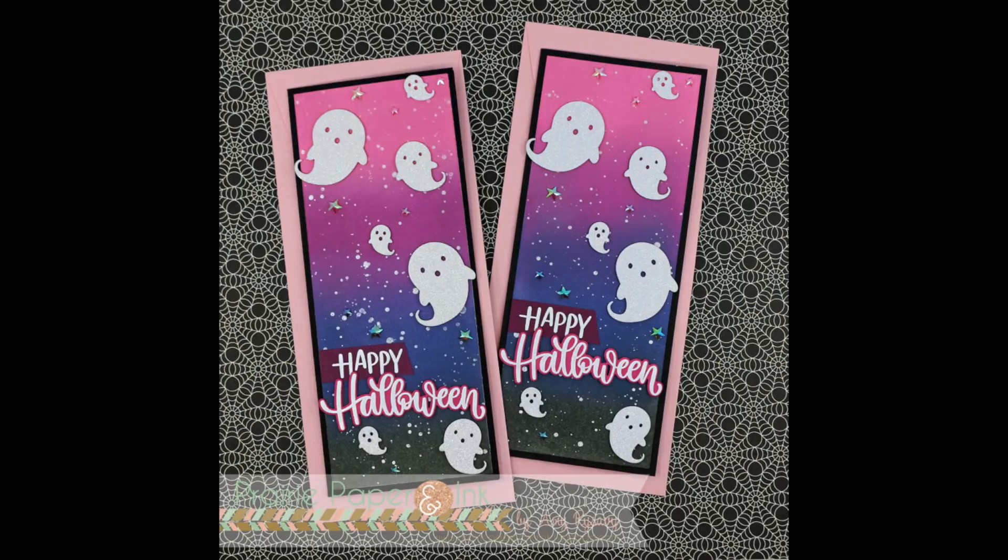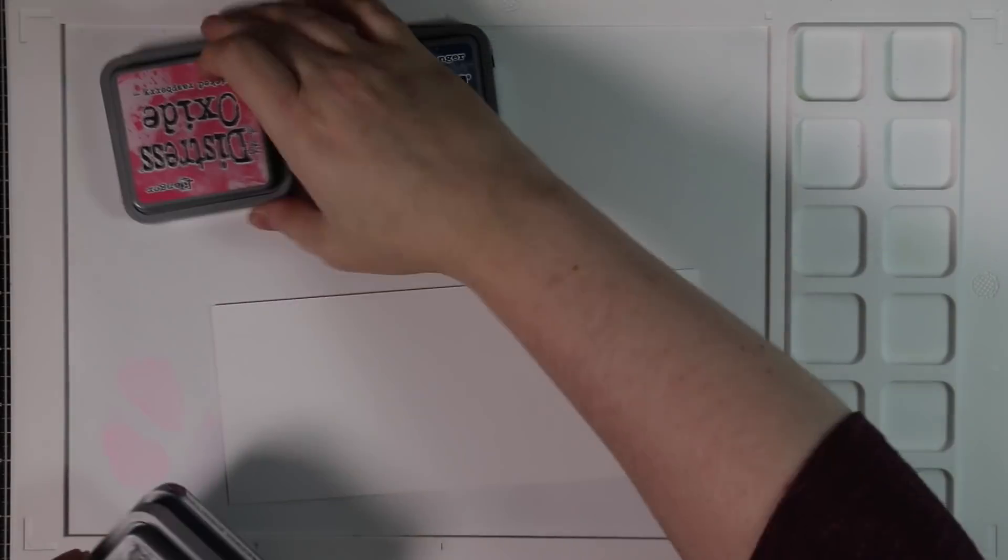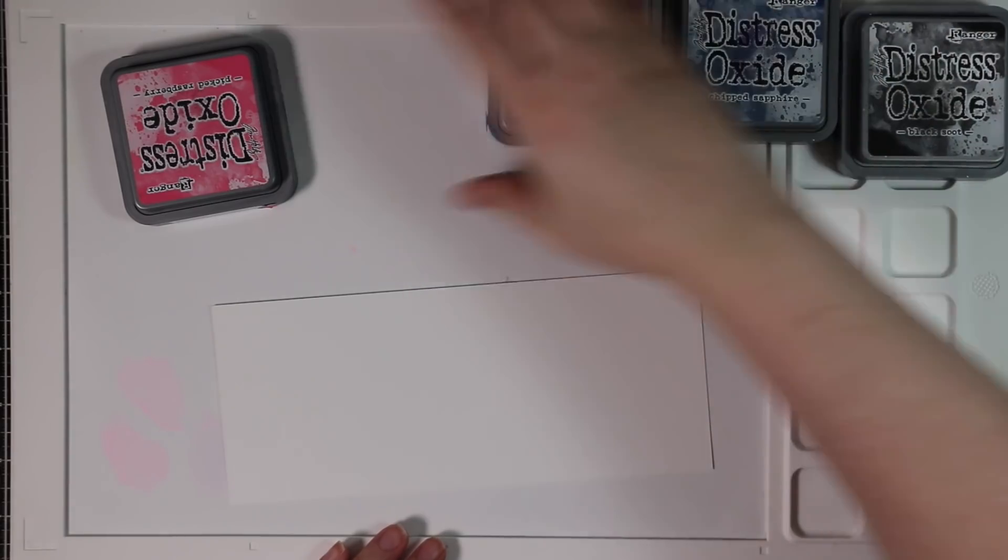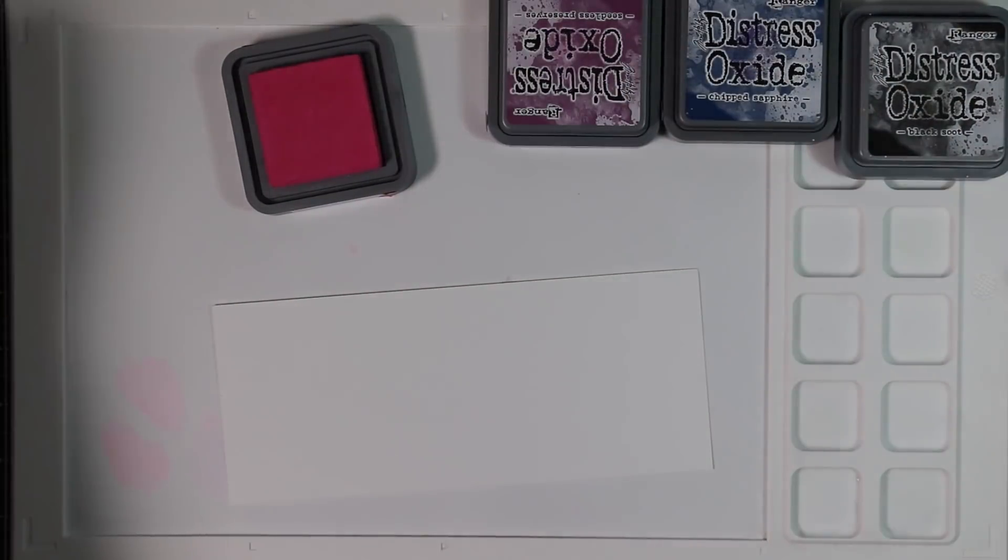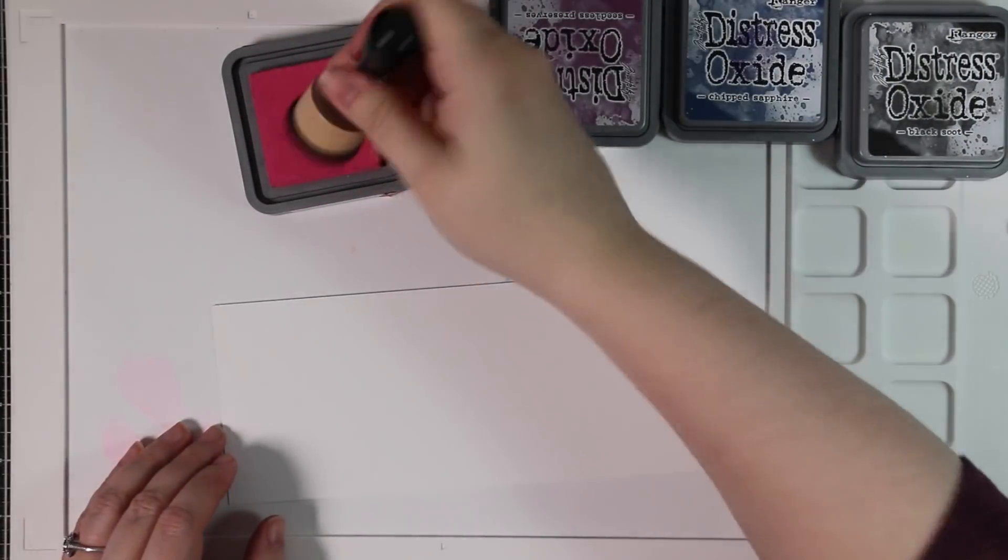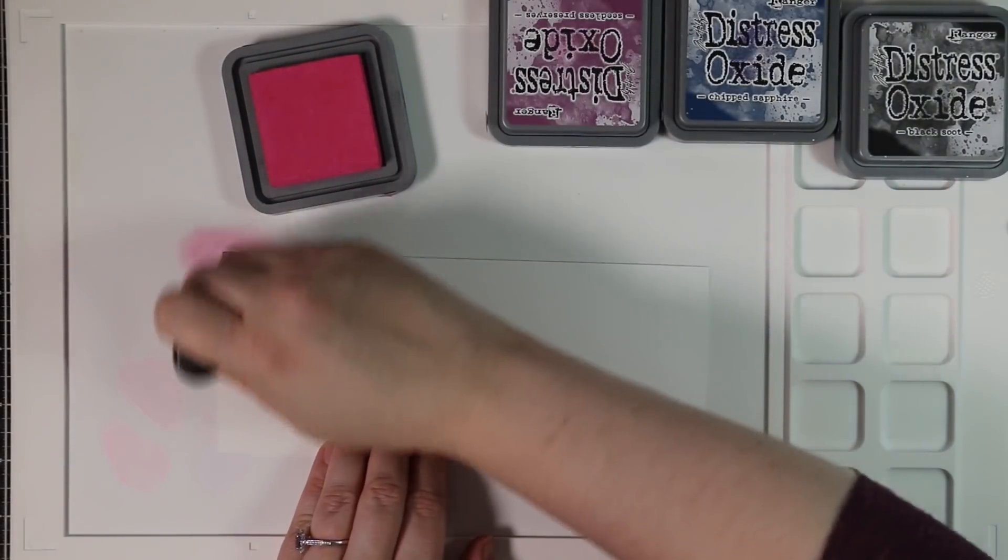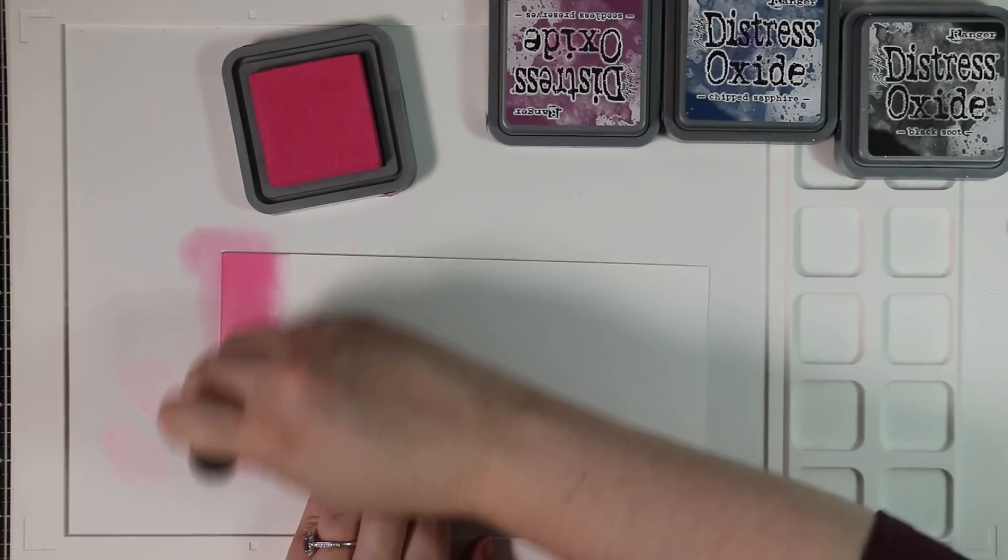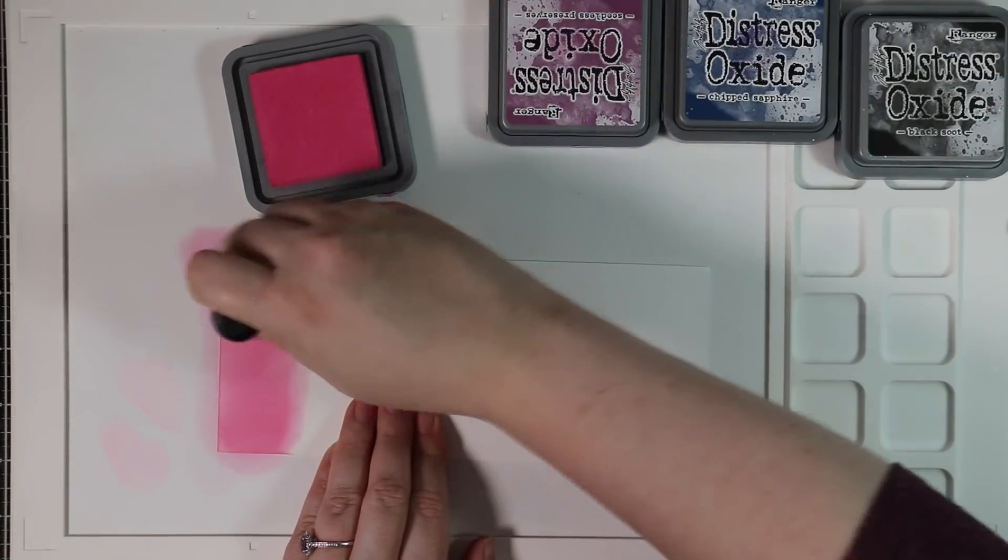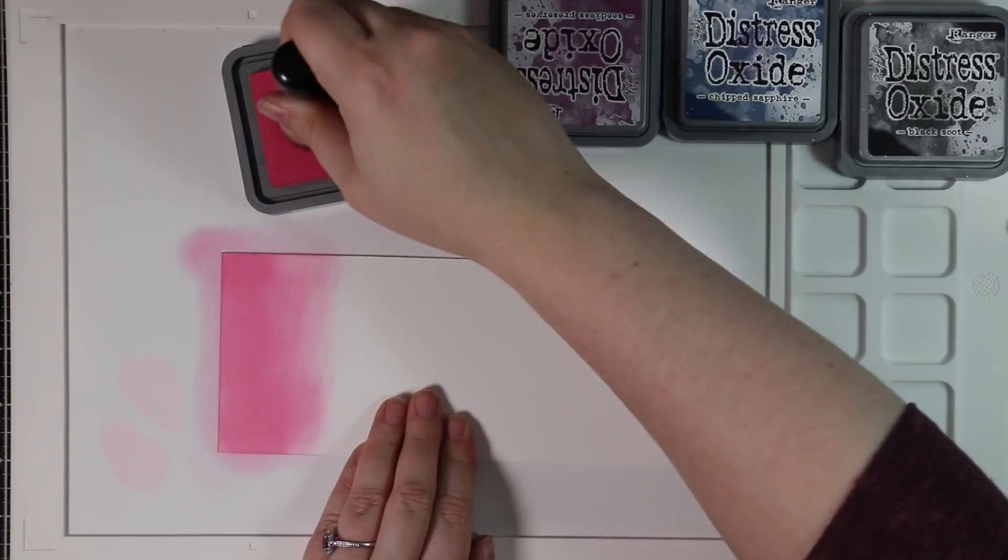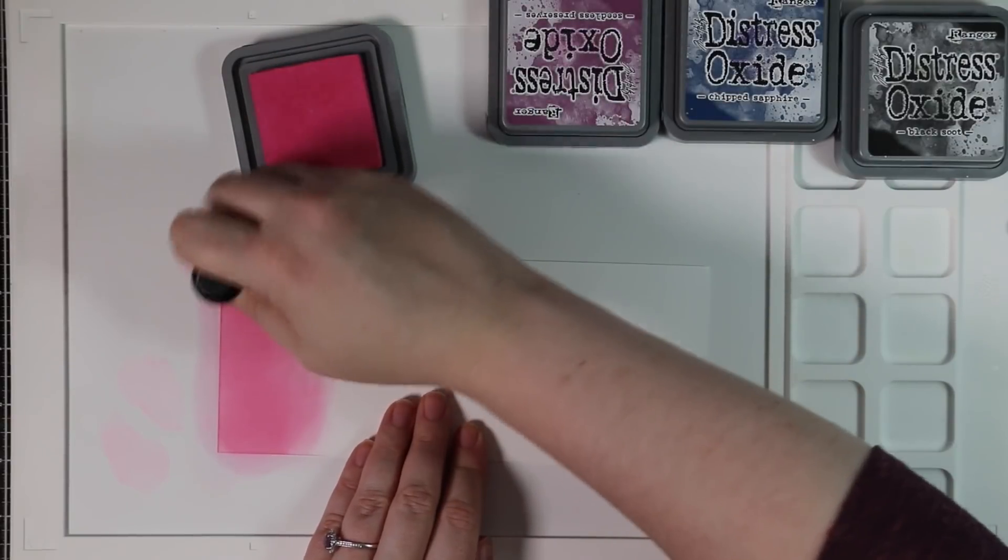Hello friends, Amy R. here with Prairie Paper and Ink, back with another Halloween card. I'm actually remaking a card that I had published in the Scrapbook and Cards Today fall issue, and I will hopefully try to remember to link to that in the description box below the video. So it was a slimline card using some really fun colors, and that's what I'm starting with here. I have some Simon Says Stamp 120 pound white cardstock, and I am blending some Distress Oxide inks onto it.